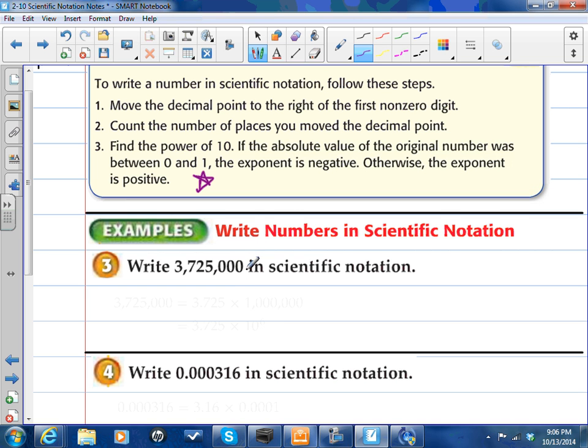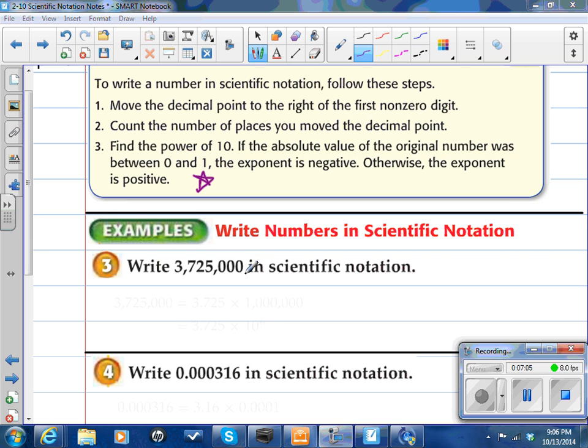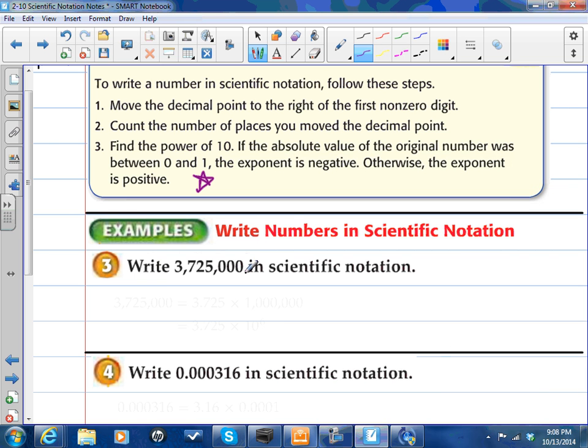So, the decimal on a whole number is at the back of a number here. The first non-zero number, since we read left to right, is actually 3. So, we need that decimal to go right here where that comma is. So, let's count how many places we'd have to move it. We move it 1, 2, 3, 4, 5, and 6 places to the left. So, I'm going to rewrite my number 3.725. And I'm going to write it times 10.